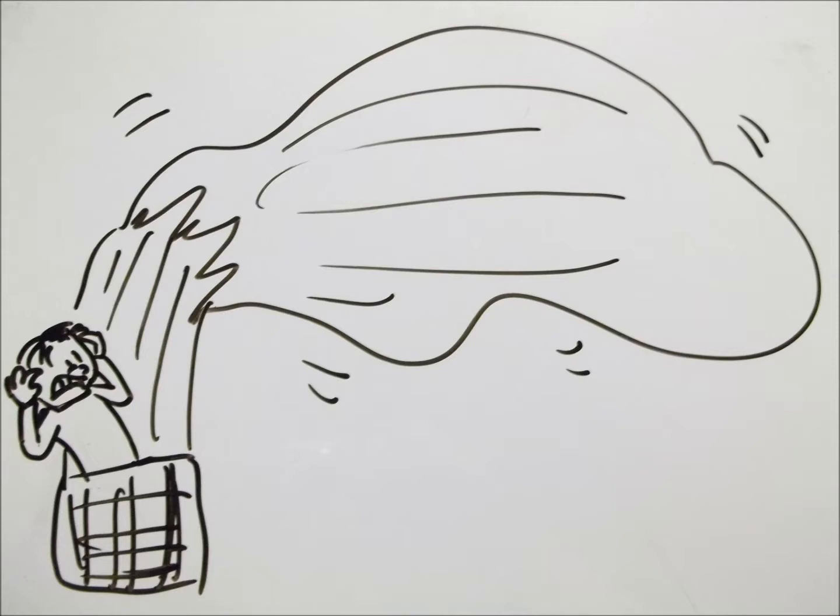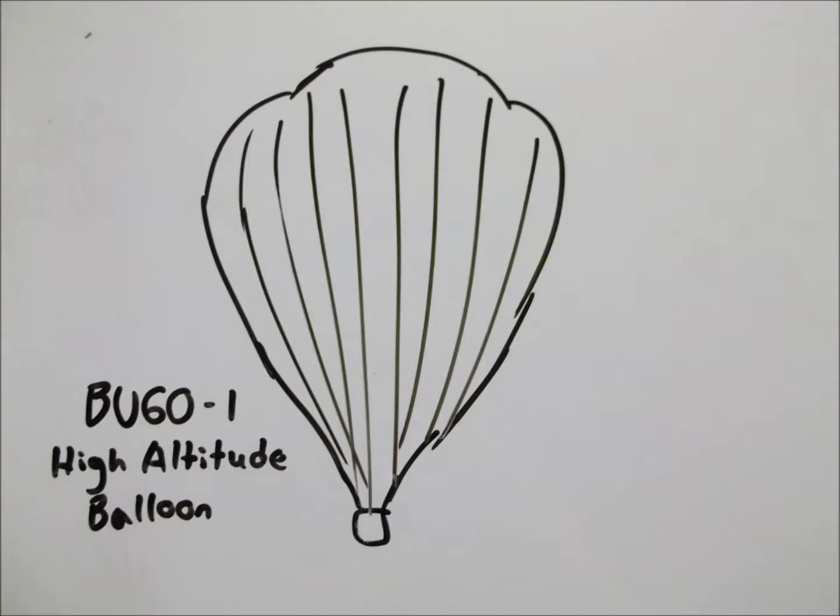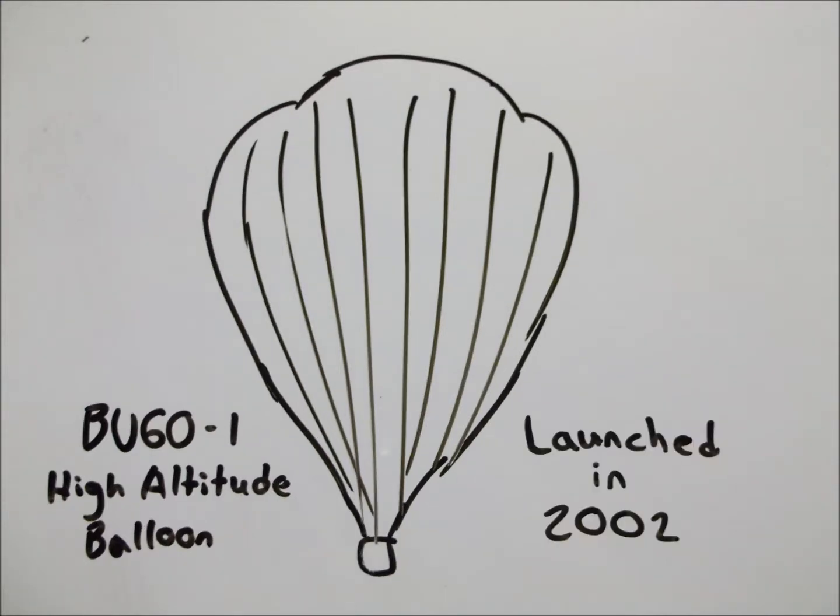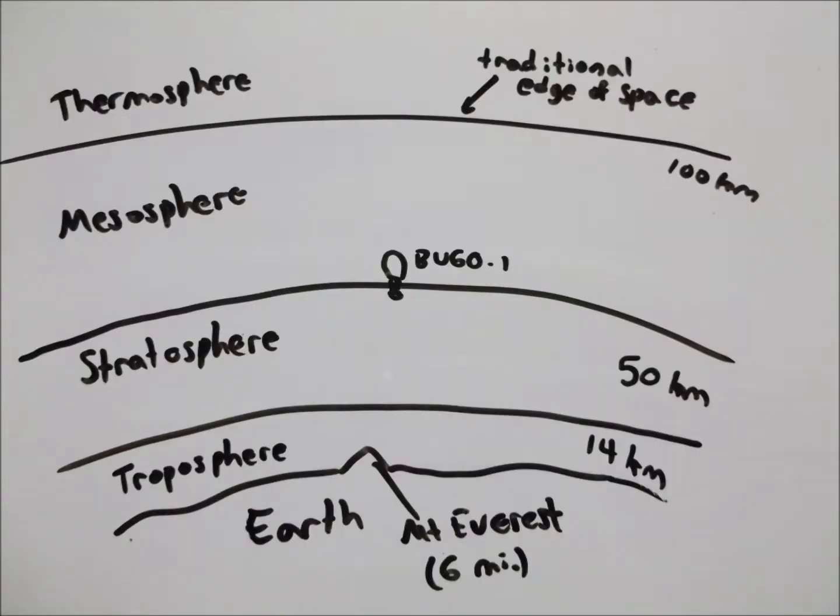As for the highest a balloon has ever traveled, that trophy goes to the BU-61 High Altitude Balloon, launched in 2002. It reached a max altitude of 53 kilometers, which is just over halfway to the traditional edge of space.